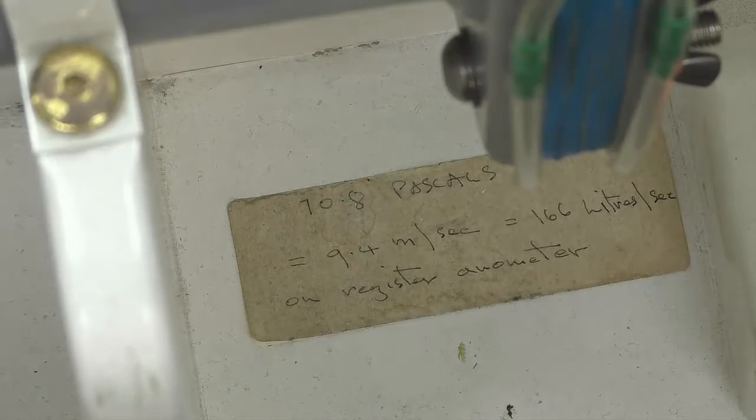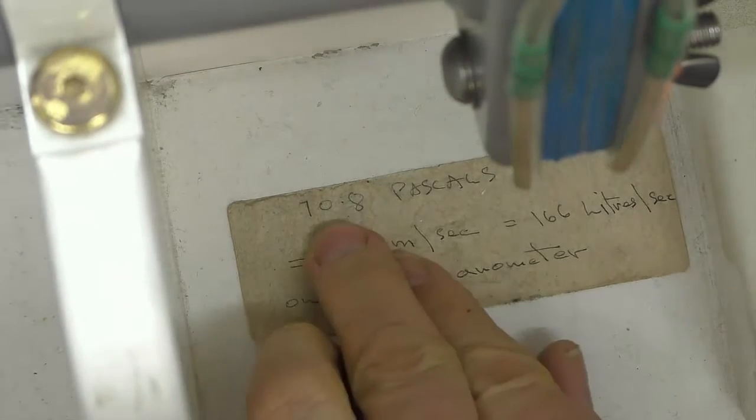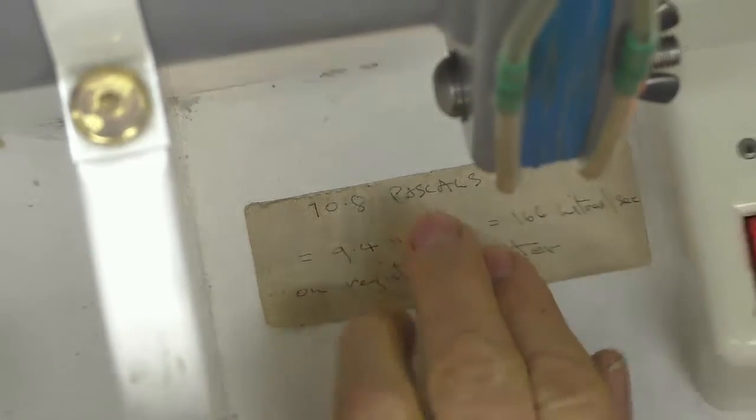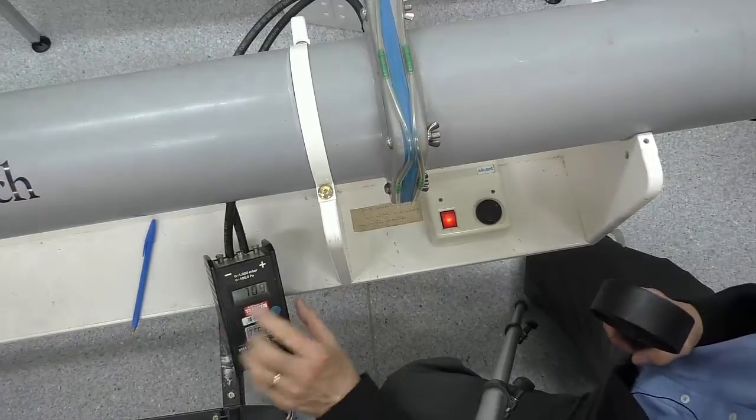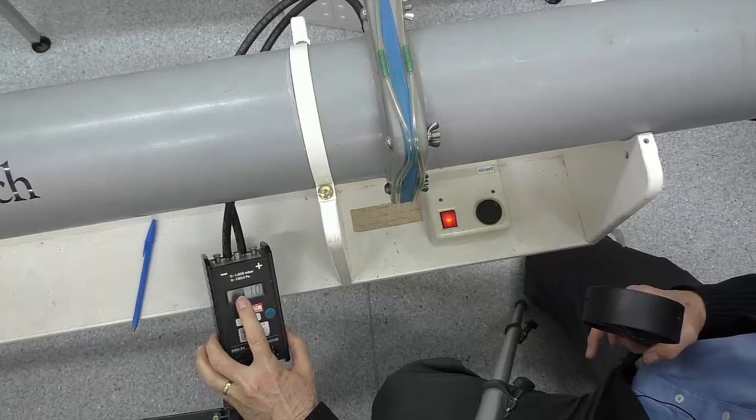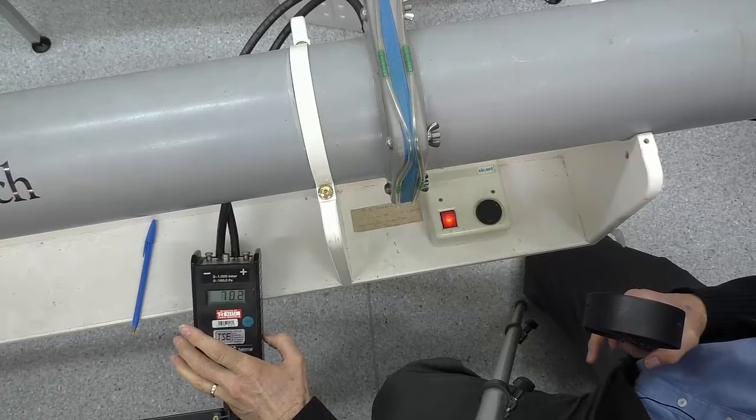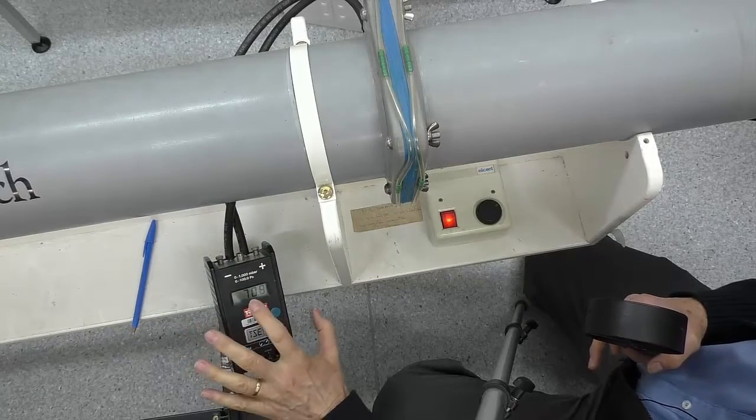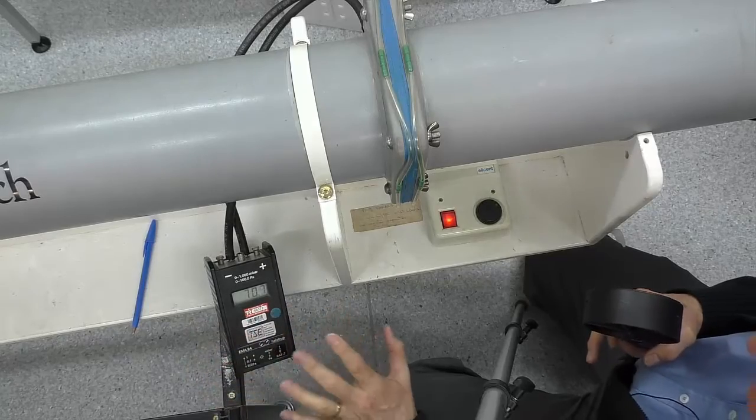Okay, this is our reference airflow rig. When we have 70.8 pascal across the orifice plate here, as measured using this manometer, that moves around a fair bit, but it's around 70.8. You can see that there's a fair bit of movement in that, but that's pretty close.